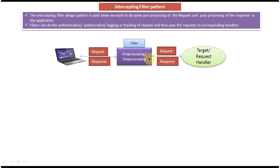We can also write common functionalities like authentication, authorization, logging, or tracking of the request in the filter. Authentication means the user will enter a username and password in the application, and in the filter we can write logic to verify whether the username and password entered are correct or not. If correct, allow them into the application; if not, deny access. The next one is authorization — based on the user role we can allow or restrict access to certain functionality.